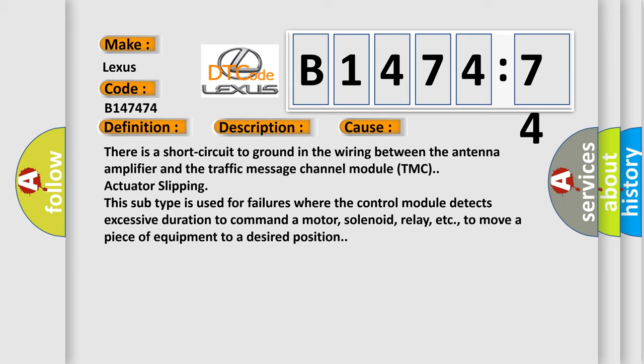This diagnostic error occurs most often in these cases: There is a short circuit to ground in the wiring between the antenna amplifier and the traffic message channel module TMC. Actuator slipping: this subtype is used for failures where the control module detects excessive duration to command a motor, solenoid, relay, etc., to move the piece of equipment to a desired position.